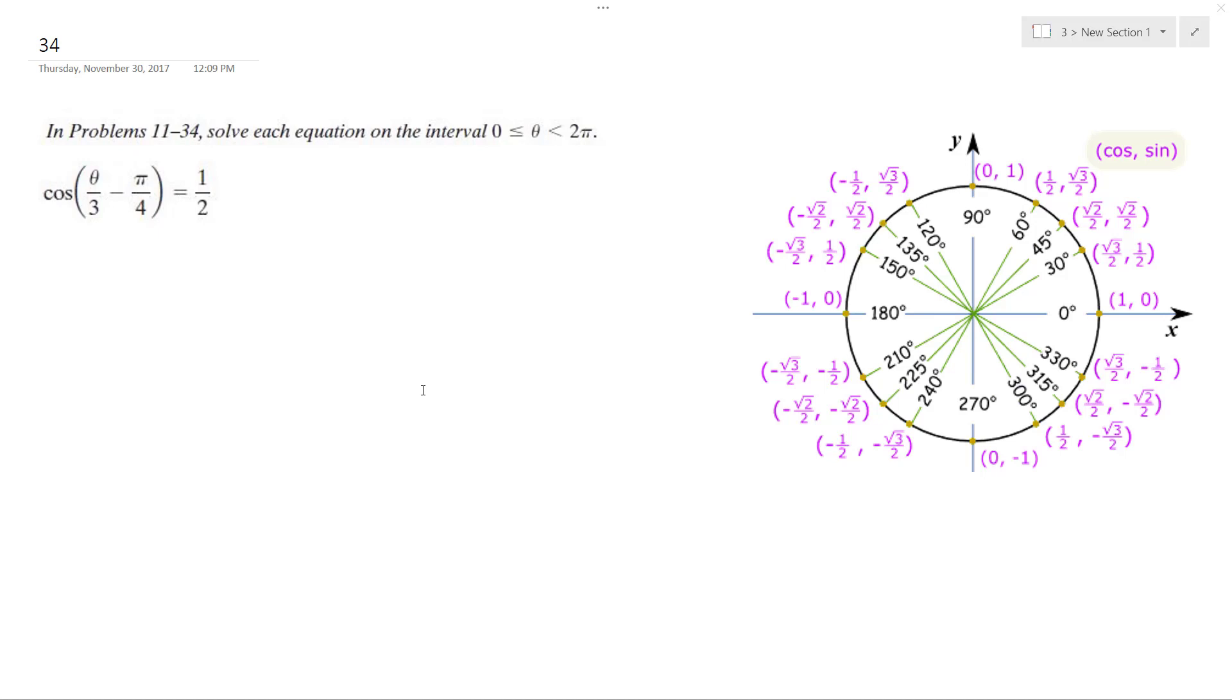Alright, solving this problem, take the inverse cosine of both sides. So we get theta over 3 minus pi over 4 is equal to 1 half, which is going to equal that at pi over 3 and 5 pi over 3.